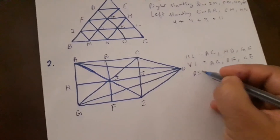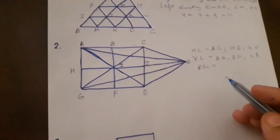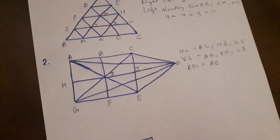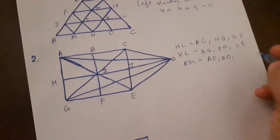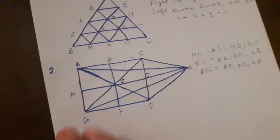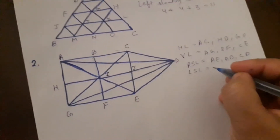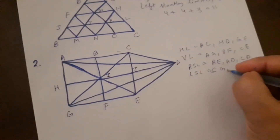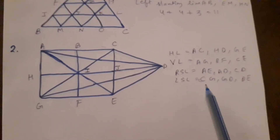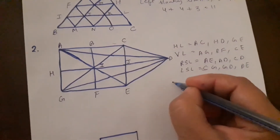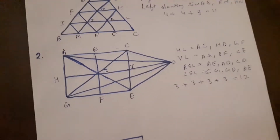Let's move to right slanting lines. The right slanting lines are C G, G D, and D E. Then the left slanting lines — count them: horizontal lines are 3, vertical lines are 3, right slanting lines are also 3, and left slanting lines are also 3. That means total there are 12 lines in this figure.